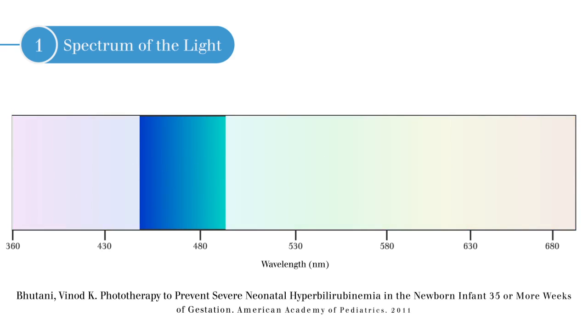Blue light, the light responsible for breaking down bilirubin in jaundiced babies, is most effective at a wavelength of 460 to 490 nanometers, per the latest reports from the American Academy of Pediatrics.